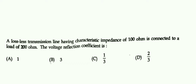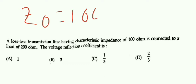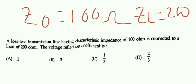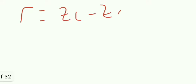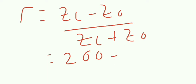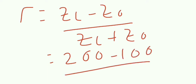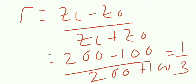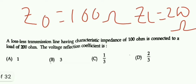They have given characteristic impedance Z0 equal to 100 ohm and load impedance ZL equal to 200 ohm. We know that the voltage reflection coefficient gamma is equal to (ZL minus Z0) divided by (ZL plus Z0). So it is (200 minus 100) divided by (200 plus 100), that is equal to 1 by 3. So the answer is 1 by 3.